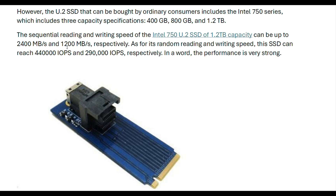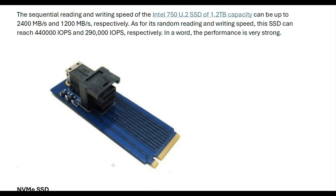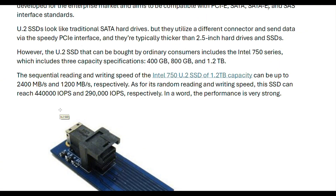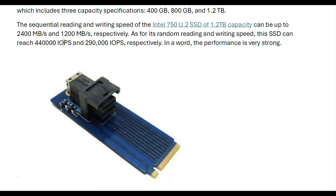The actual read speed of the Intel 750 U.2 SSD at 1.2 TB capacity can reach up to 2400 MBps, and 1200 MBps per second respectively. For random read/write speeds, the SSD can reach up to 440,000 IOPS and 290,000 IOPS respectively. Overall, the performance is very strong. This is the typical U.2 SSD — not commonly used compared to NVMe SSDs.